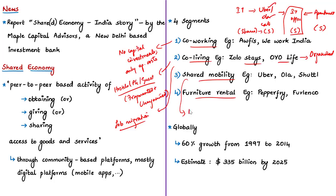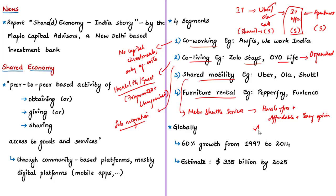Next comes shared mobility — simple examples being cab aggregators like Uber and Ola, as well as metro shuttle services. Shared mobility exists because there is a very high demand for hassle-free, affordable, and easy travel options, especially in urban areas. This industry mainly caters to consumers who prefer access to vehicles rather than owning them. It is also economical and a viable alternative for individuals, reducing the operational costs of owning a vehicle for regular use, apart from saving capital investment on buying a vehicle.